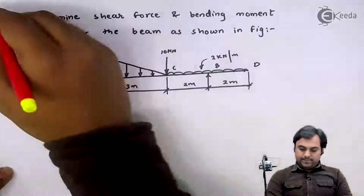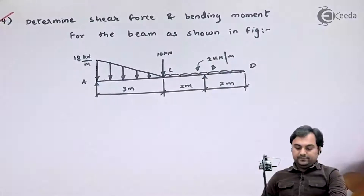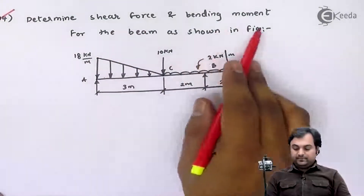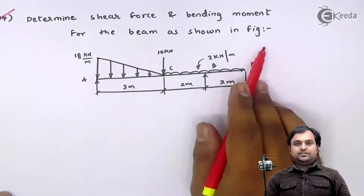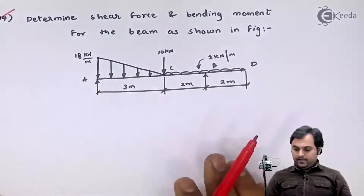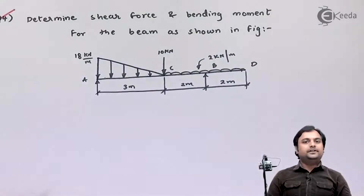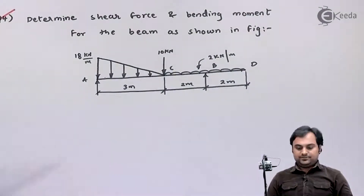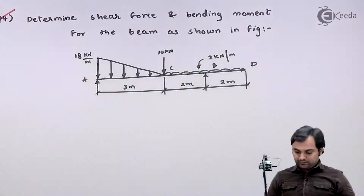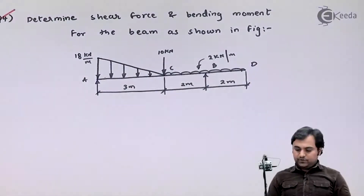Let us take the fourth question. Determine shear force and bending moment for the beam as shown in the figure. We have a diagram and we have to solve this question and draw shear force and bending moment diagrams. Now let us start solving this problem.